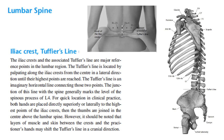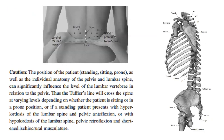However, it should be noted that layers of muscle and skin between the crests and the practitioner's hands may shift Tuffier's line in a cranial direction. Caution: the position of the patient — standing, sitting, or prone — as well as the individual anatomy of the pelvis and lumbar spine can significantly influence the level of the lumbar vertebrae in relation to the pelvis. Thus, Tuffier's line will cross the spine at varying levels depending on whether the patient is sitting or in a prone position, or if a standing patient presents with hyperlordosis of the lumbar spine and pelvic anteflexion, or with hyperlordosis of the lumbar spine and shortened ischio-crural musculature.